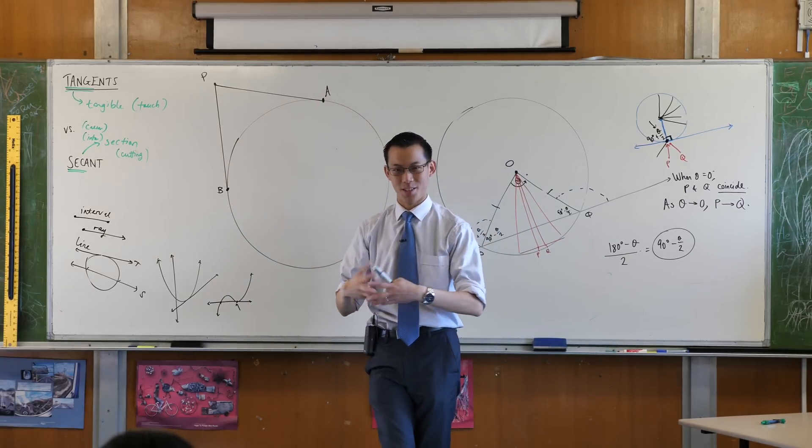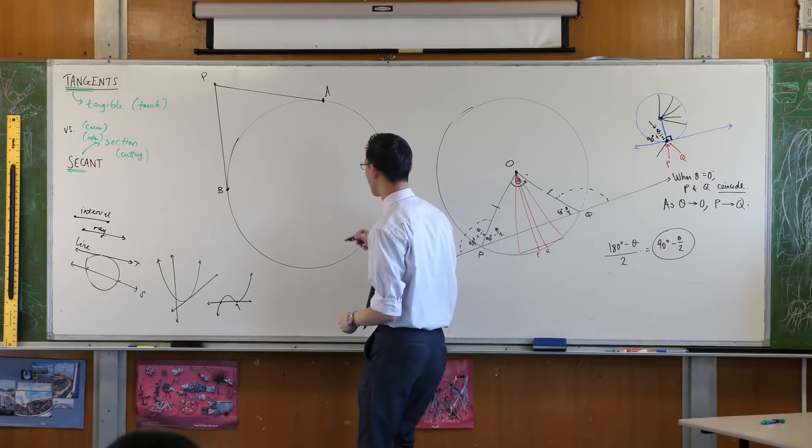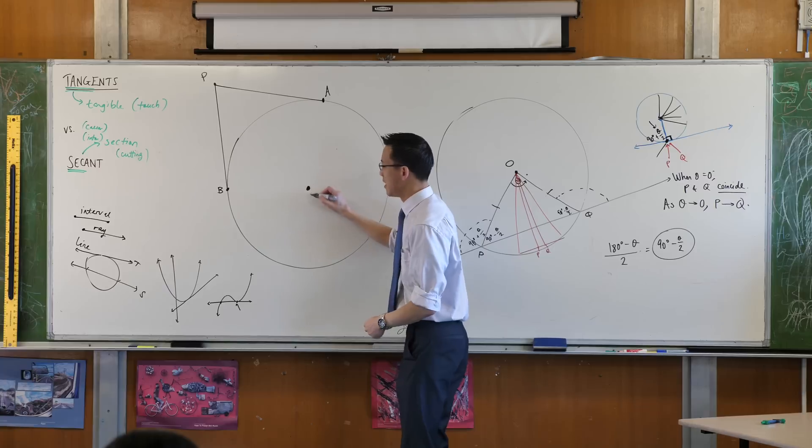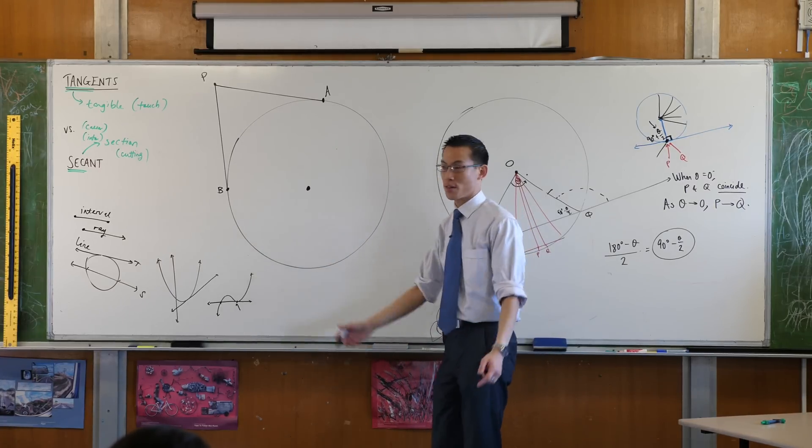What's the stock standard construction that you always put in a circle when you don't know what else to do? The radius, it's from the center, right? Now in this case I've got two points on the circumference, so therefore I'm going to draw both of the radii.